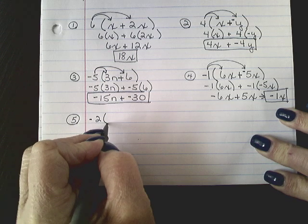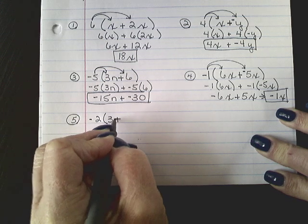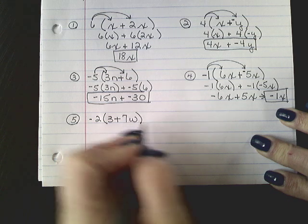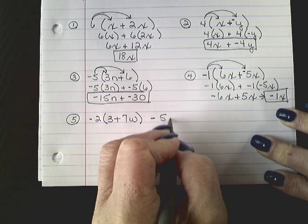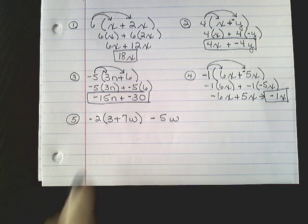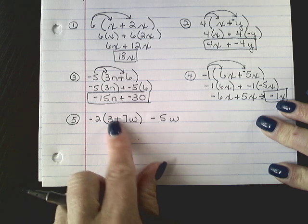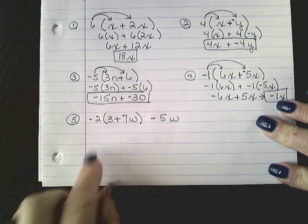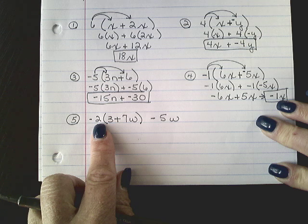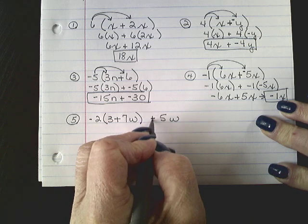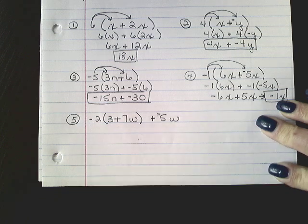Negative 2 times 3 plus 7w minus 5w. Okay, so this negative 2 is on the outside of my parentheses, so I'm not going to do keep, change, change there because I have nothing to follow it through to change. I'm just going to distribute that. But then I do have a minus 5w, so I'm going to make that to plus a negative 5w.